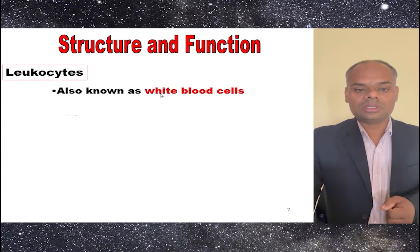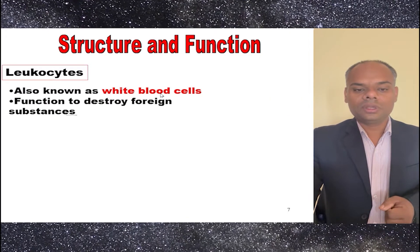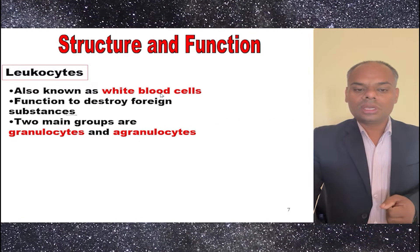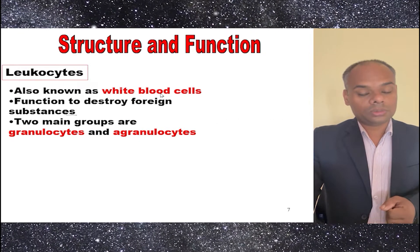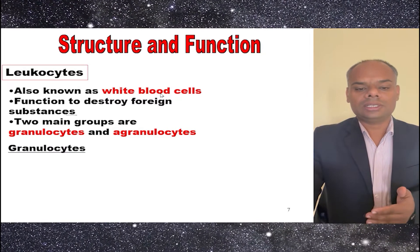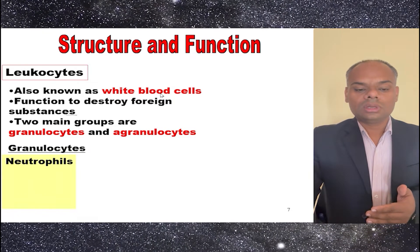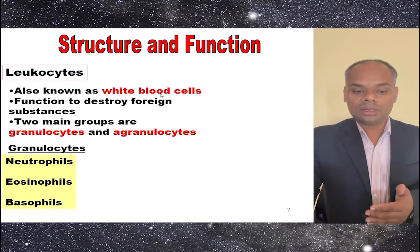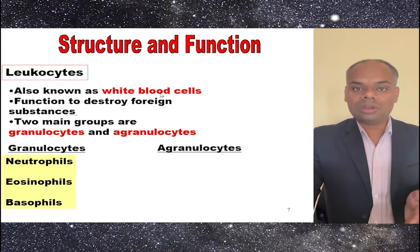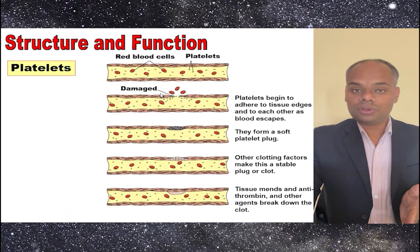Next comes leukocytes, also known as WBCs. Their function is to destroy foreign substances. There are two main groups: granulocytes and agranulocytes. Granulocytes include neutrophils, eosinophils, and basophils. Agranulocytes consist of monocytes and lymphocytes.